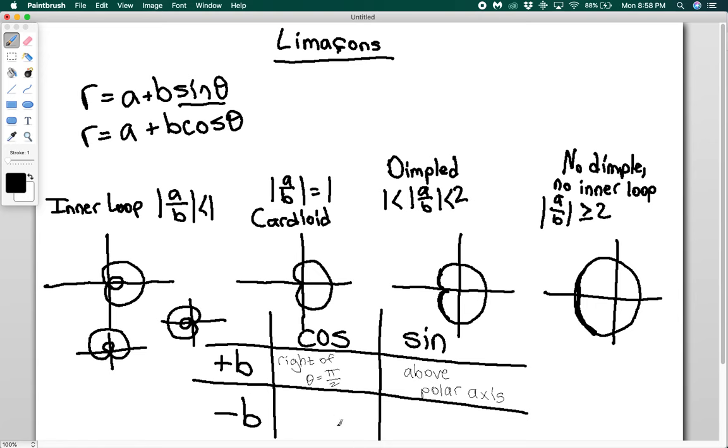And then the opposite, if it's negative, if it's negative, you're going to have it to the left of theta equals pi over two. So these would be flipped. So we'd have my cardioid instead of being like that, my cardioid would be like that. And if it's a sine, then it's going to be below the polar axis.